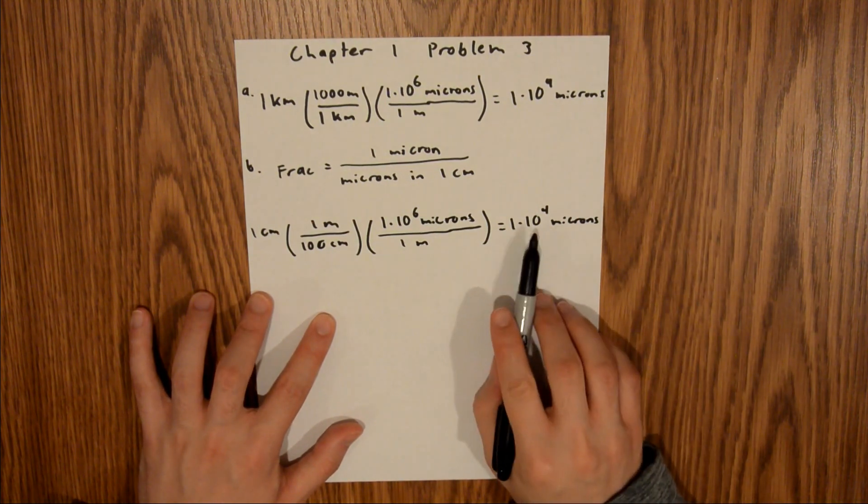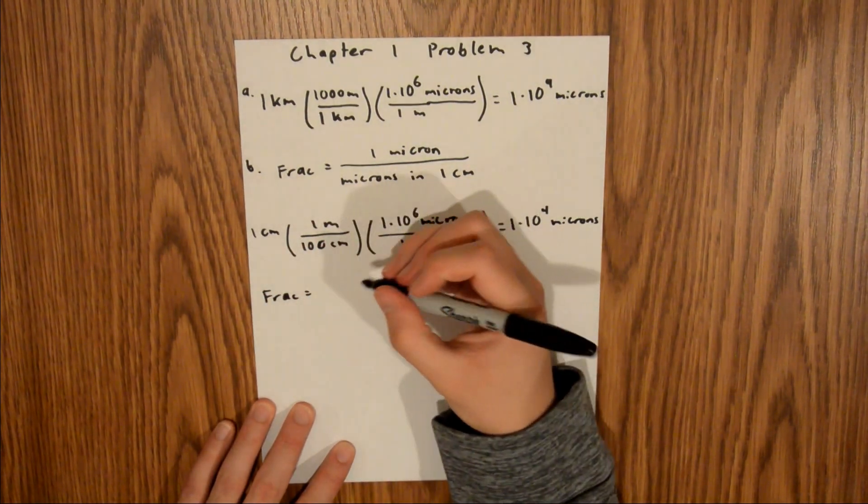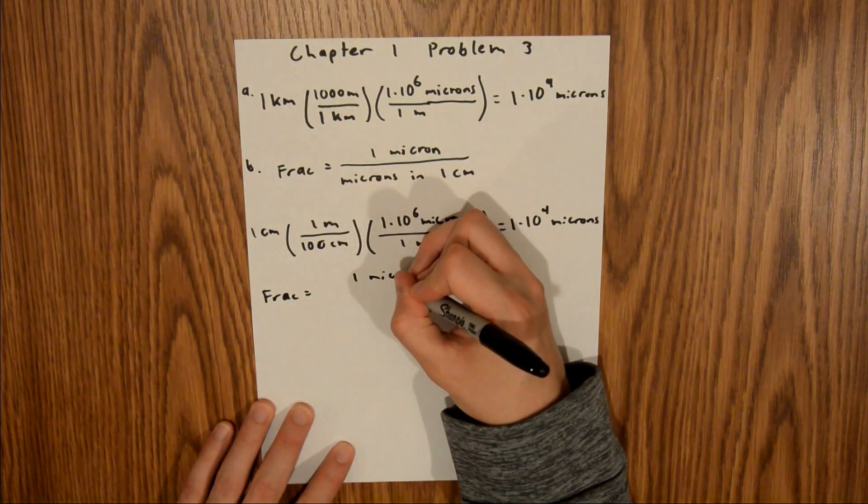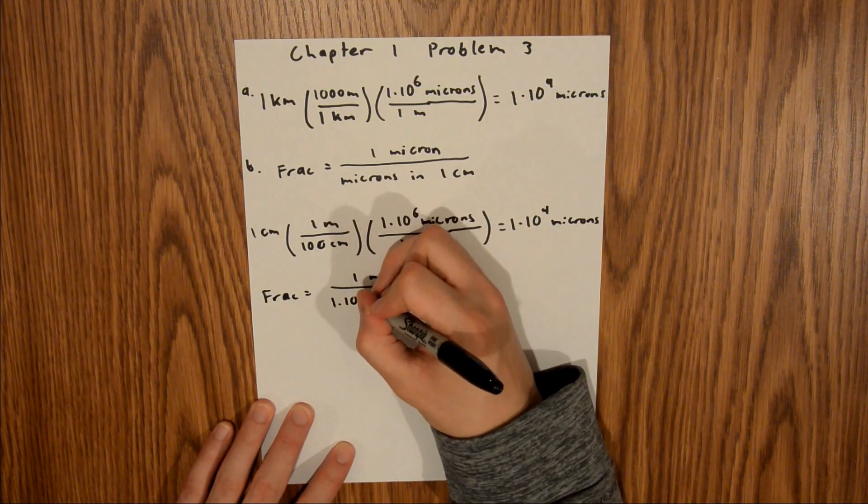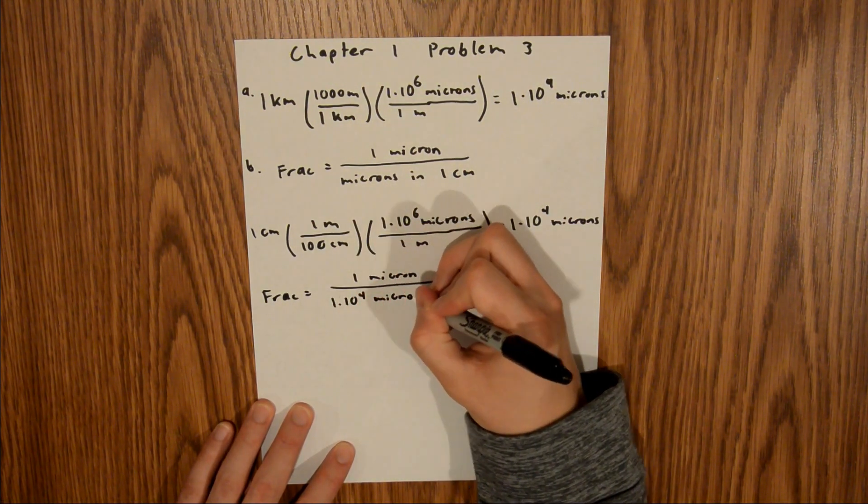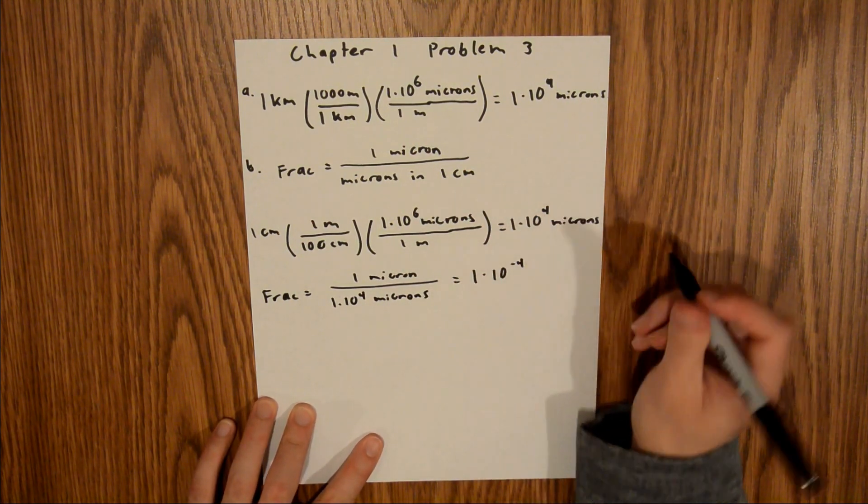And so now we can take that and plug it into our equation up here, and so the fraction that we are looking for is 1 micron over 1 times 10 to the fourth microns. And so that fraction is 1 times 10 to the negative fourth.